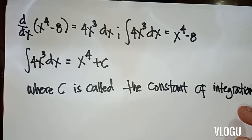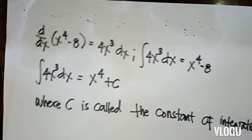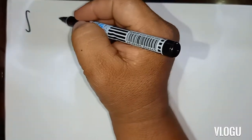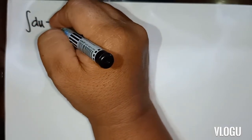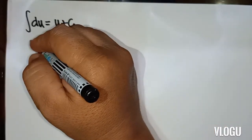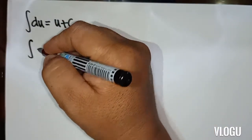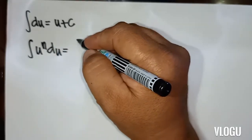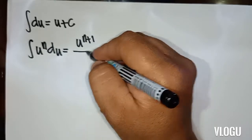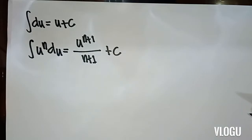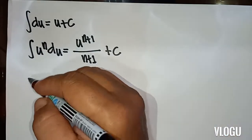We will now look at examples using our formulas. The first formula: the integral of du is u plus C. The integral of u to the n du equals u to the n plus 1 over n plus 1, plus C.